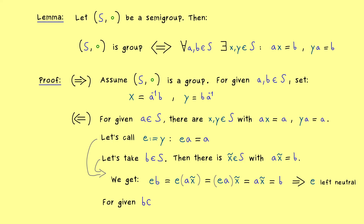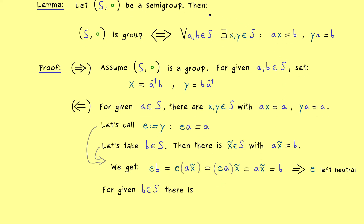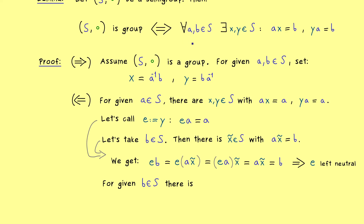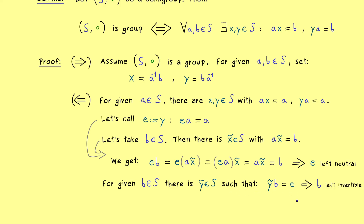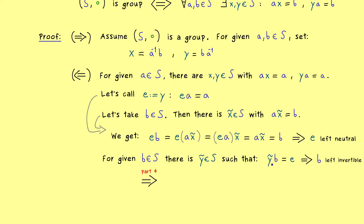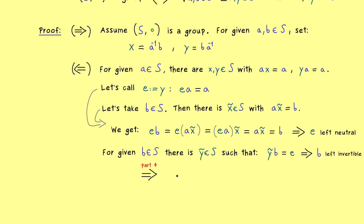Moreover, we now know that we find a left inverse for any arbitrary b. We use our solvability property with e in place of a: this implies that we find an element y-tilde such that y-tilde times b equals e. So b is left invertible, and this works for every b in S. Therefore all elements in S are left invertible. As discussed in part 4, if we have the things from the left we also have them from the right, so we have a group. We have shown that S is a group, and the whole lemma is proven.